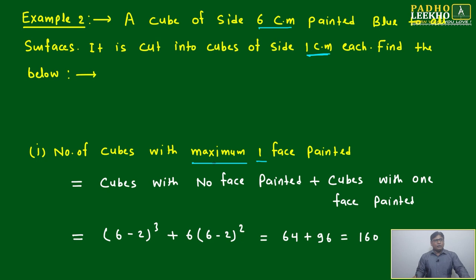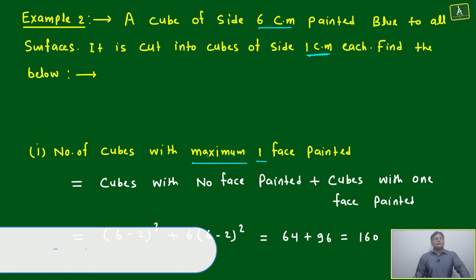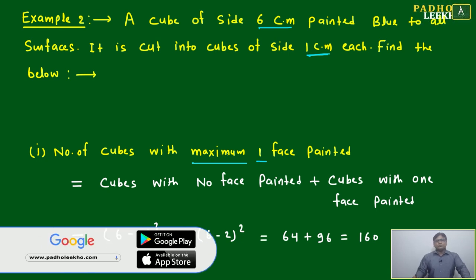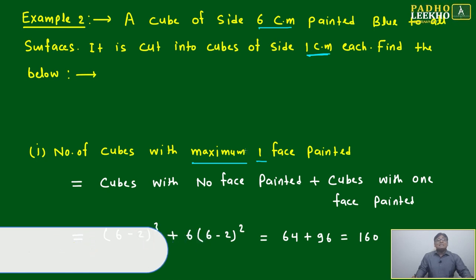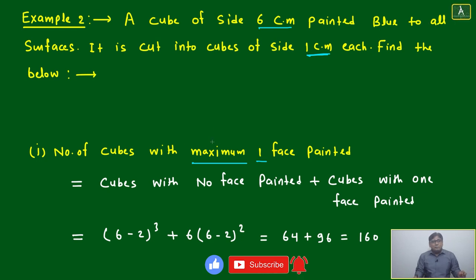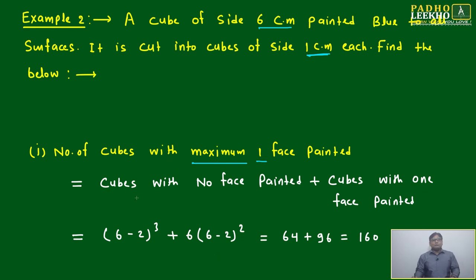Words like maximum, minimum, at most, at least — these grammatical words are very important. Be careful about the grammatical meaning of the question. Maximum one face painted means cubes with no face painted are also considered. If it said only one face painted, then only exactly one face would be counted.